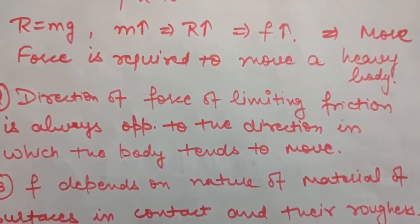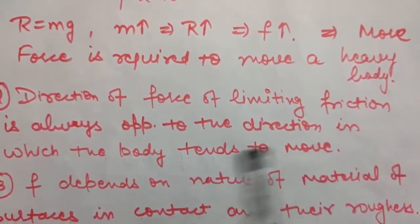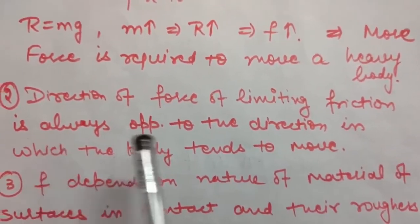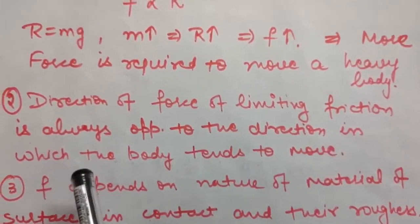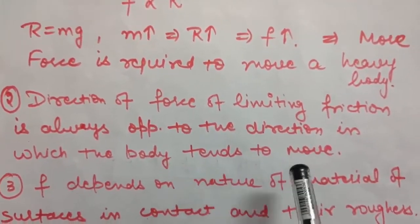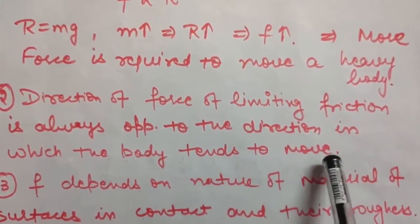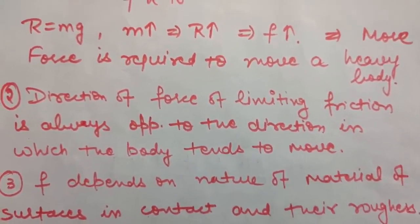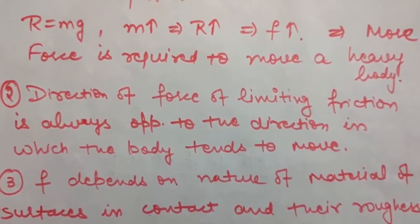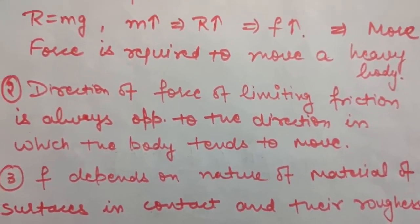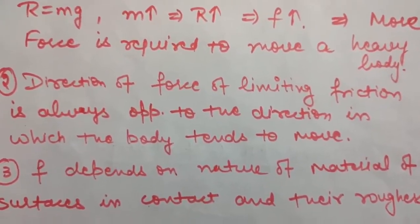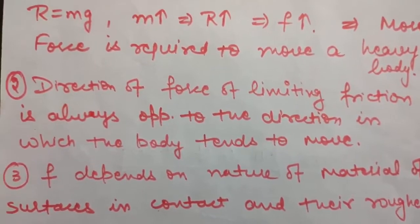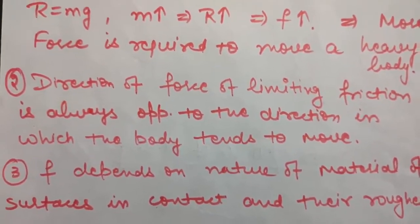The second law of limiting friction states that the direction of the force of limiting friction is always opposite to the direction in which the body tends to move. Force of friction always acts in the direction opposite to the direction of motion.